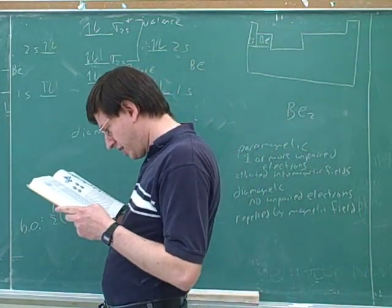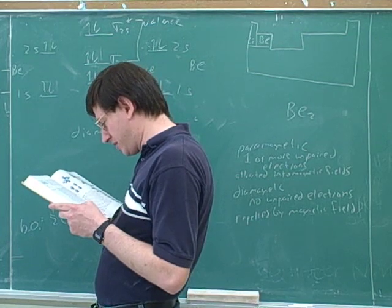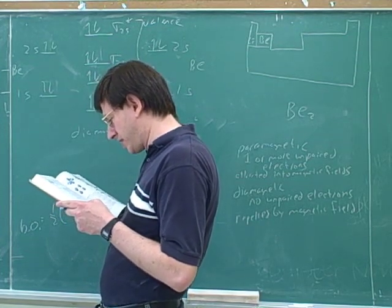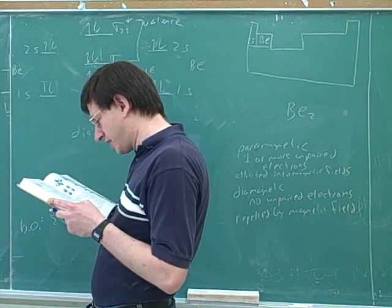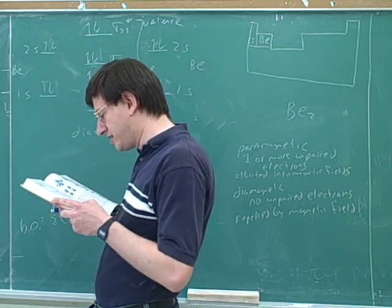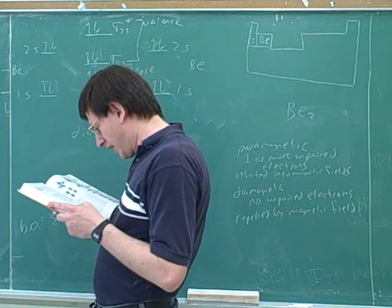Let's see what the textbook says. The bond order is zero. Thus, the model predicts that Be2 is not more stable than separate Be atoms, so no molecule should form. However, experiments indicate that Be2 gaseous does exist, although it has a very weak bond.